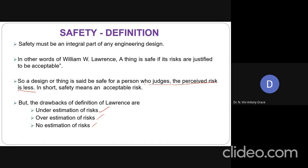Either we can underestimate the risks by our judgment and our judgment may fail, or we may overestimate the risks, or we cannot estimate at all — that is, we are not interested in estimating the risk and it can be either unsafe or a safe thing.